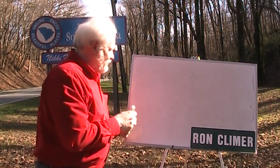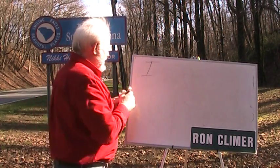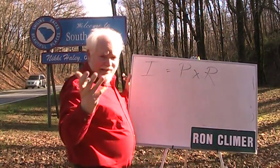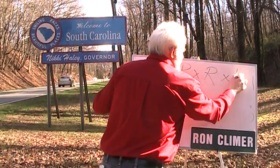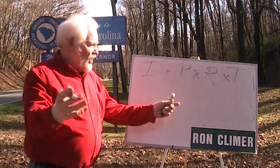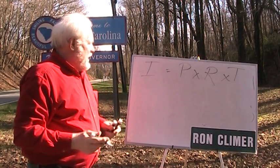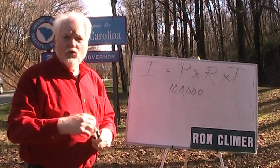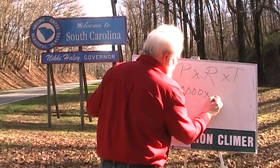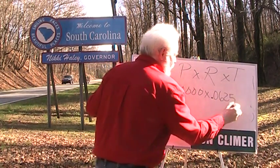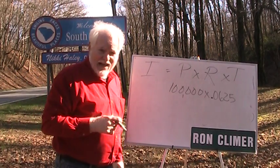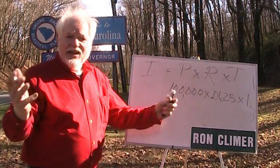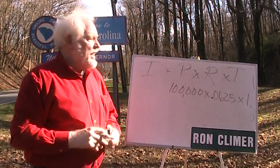The formula is: Interest (I) equals Principal — that's how much you borrow — times the Rate (the interest rate, 6.25% or whatever it is) times the Time that you have the money. Obviously, the longer you have the money, the more interest you pay. So if you borrowed $100,000 at 6.25% — expressed as a decimal that's .0625 — times $100,000, times the time expressed in years. If we have the money for one year, how much interest will we pay?